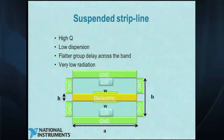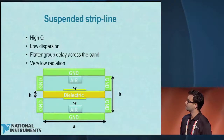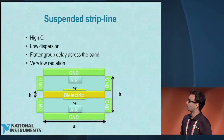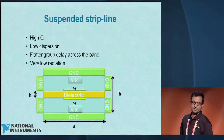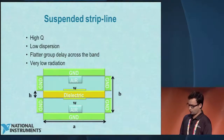The structure we use is called suspended stripline. It's a PCB in the middle — a dielectric with metal on top and bottom — enclosed in a waveguide structure. Because of this enclosure, it has very low radiation, is almost in air so it has really low dispersion, very high Q, and flat group delay because even and odd modes are very close to each other. That's the reason we chose this structure.